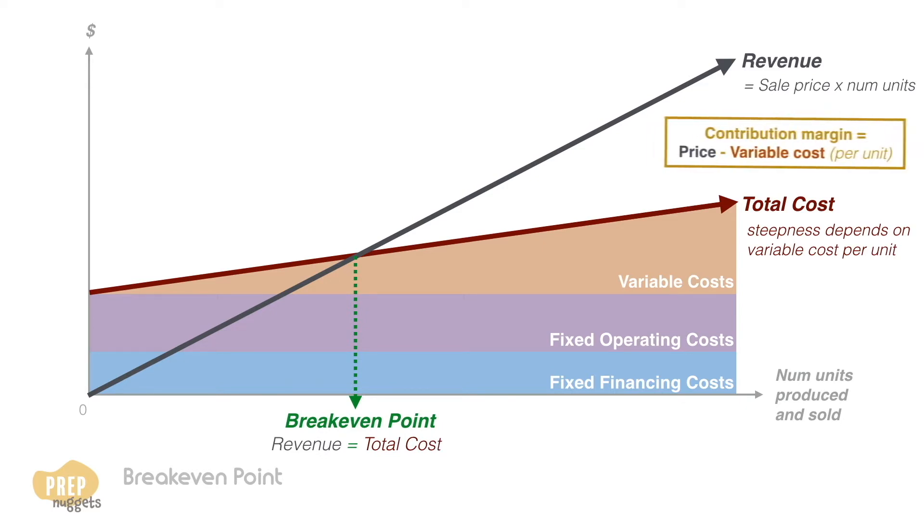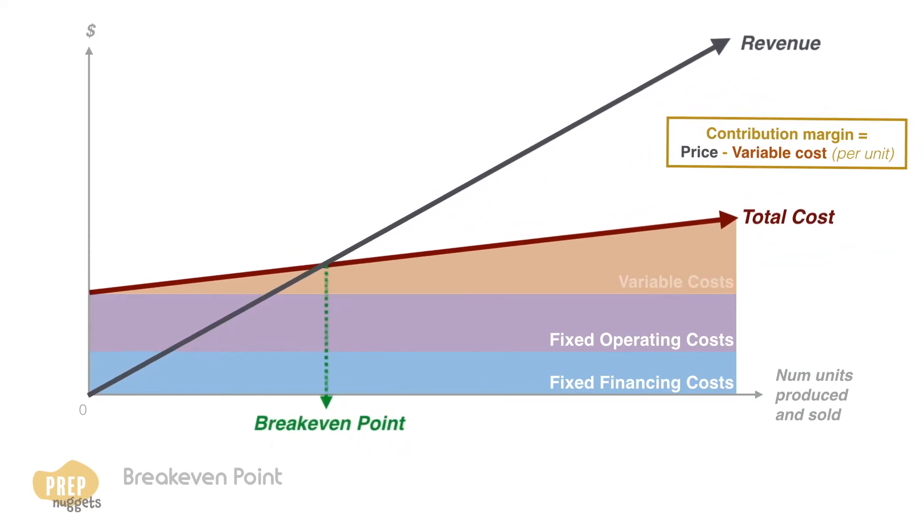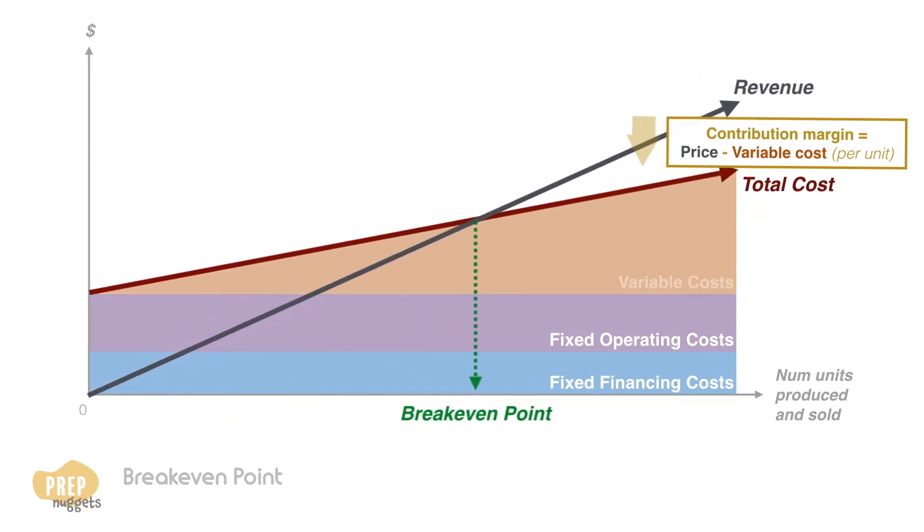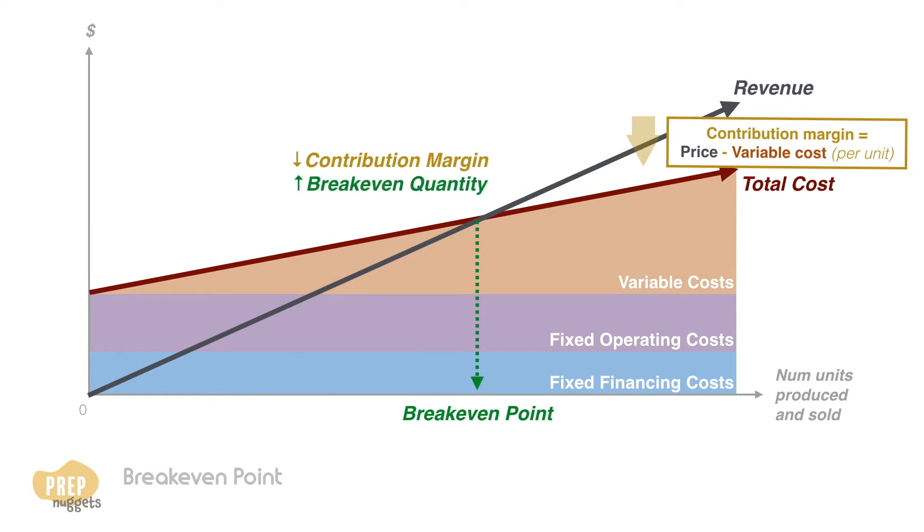The contribution margin is the difference between the price and variable cost per unit. When the contribution margin widens, the break-even quantity is reduced. Conversely, when it narrows, the break-even quantity increases.